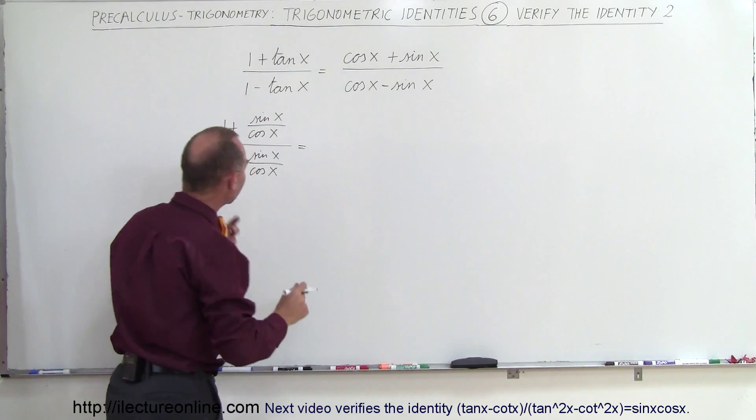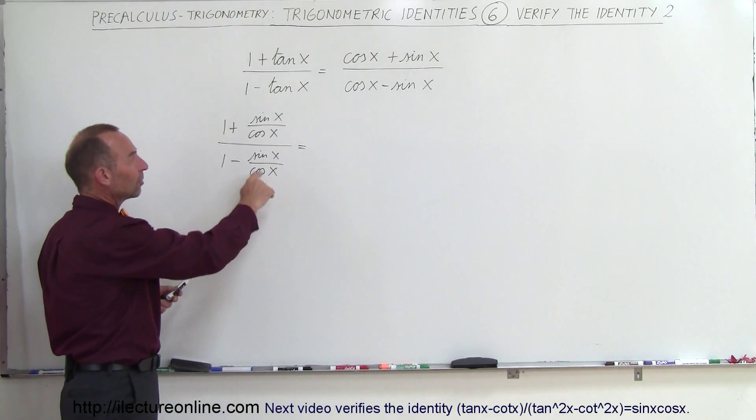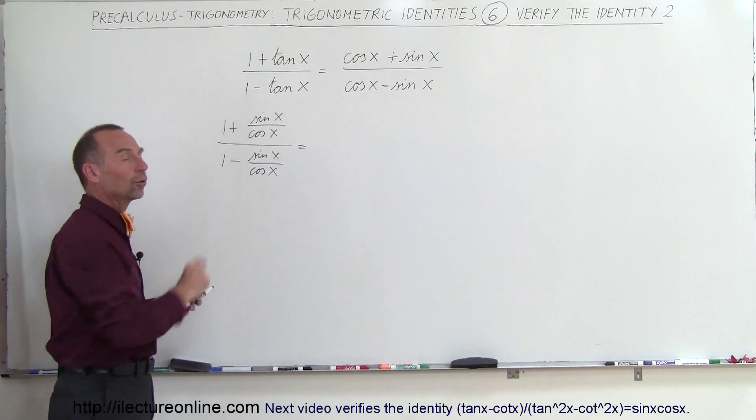At that point what I want to do is get rid of the denominators and multiply the top and the bottom by the cosine of x.